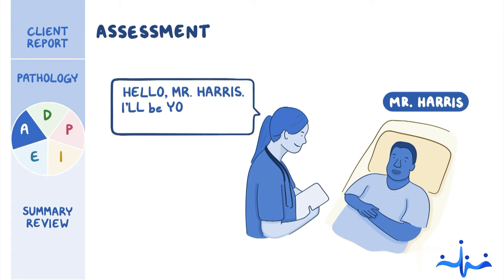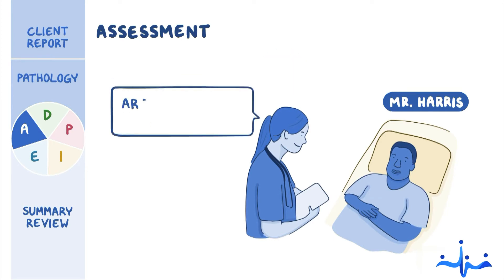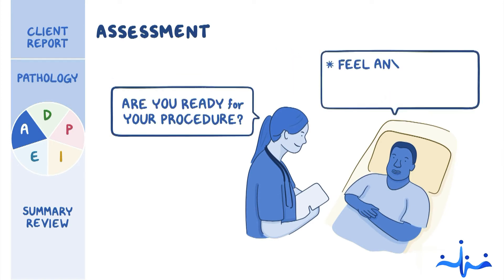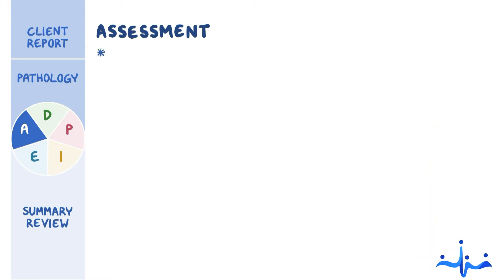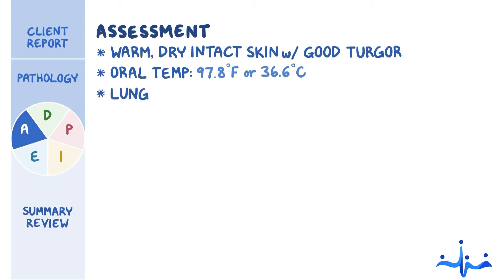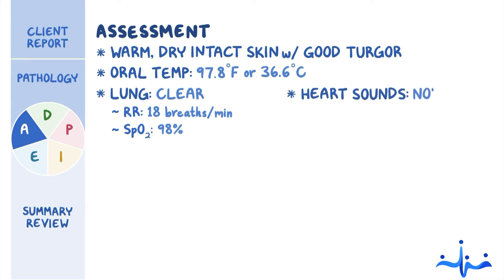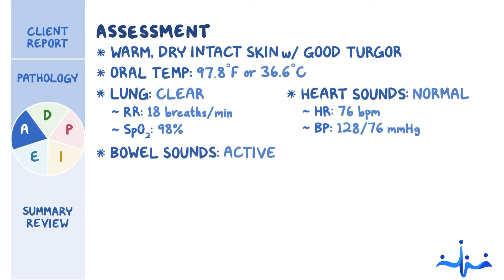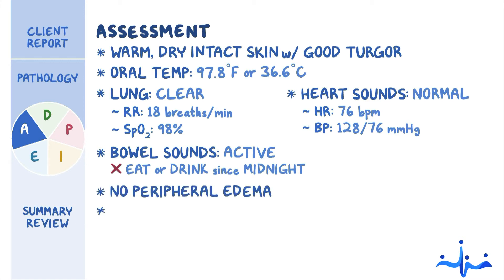You introduce yourself, perform hand hygiene, and confirm his identity. After asking if he feels ready for his procedure, he says he is anxious, but hopefully it will help him have less chest pain when taking his daily walks. Your assessment reveals warm, dry, intact skin with good turgor. His oral temperature is 97.8°F (36.6°C). Lungs are clear with a respiratory rate of 18 breaths per minute, and SpO2 is 98% on room air. Heart sounds are normal, with a regular heart rate of 76 beats per minute, and blood pressure of 128/76 mmHg. Bowel sounds are active, and Mr. Harris confirms he hasn't had anything to eat or drink since midnight. No peripheral edema is present, and pedal pulses are normal.